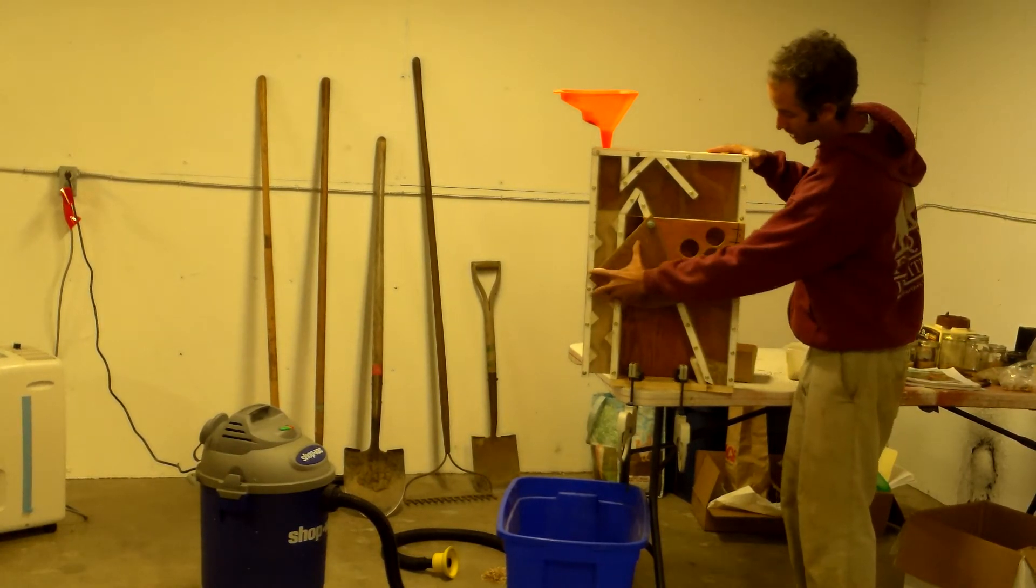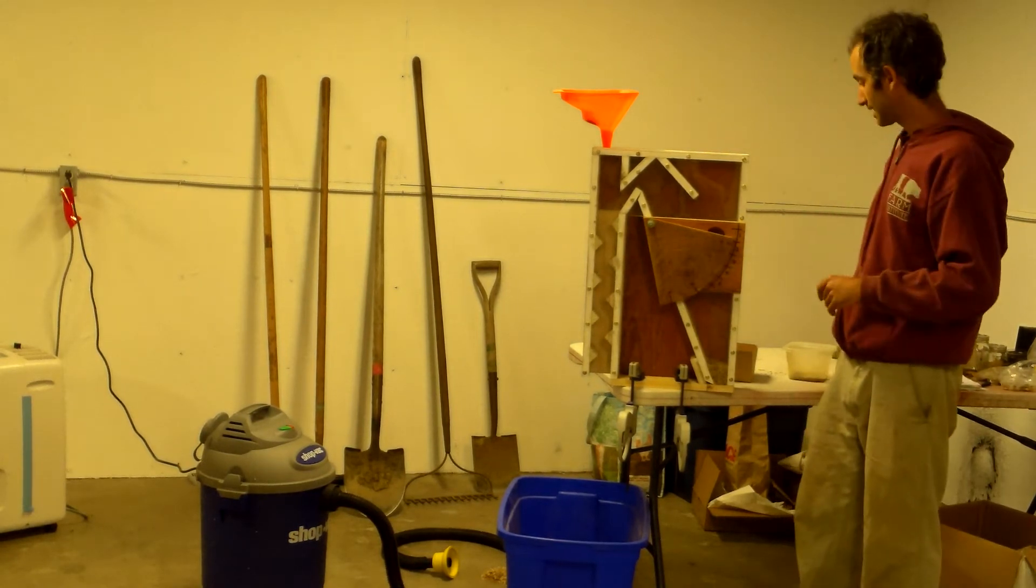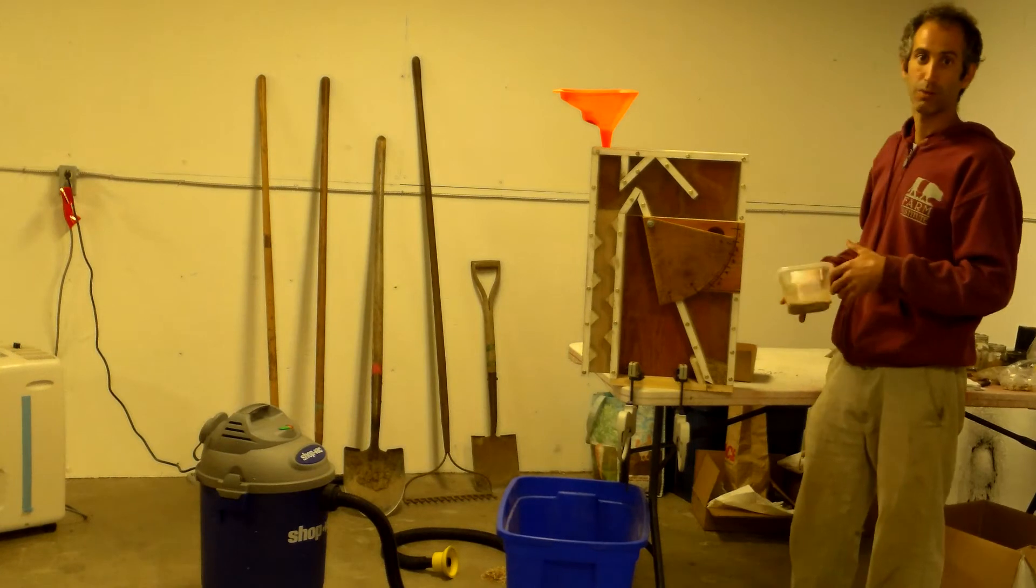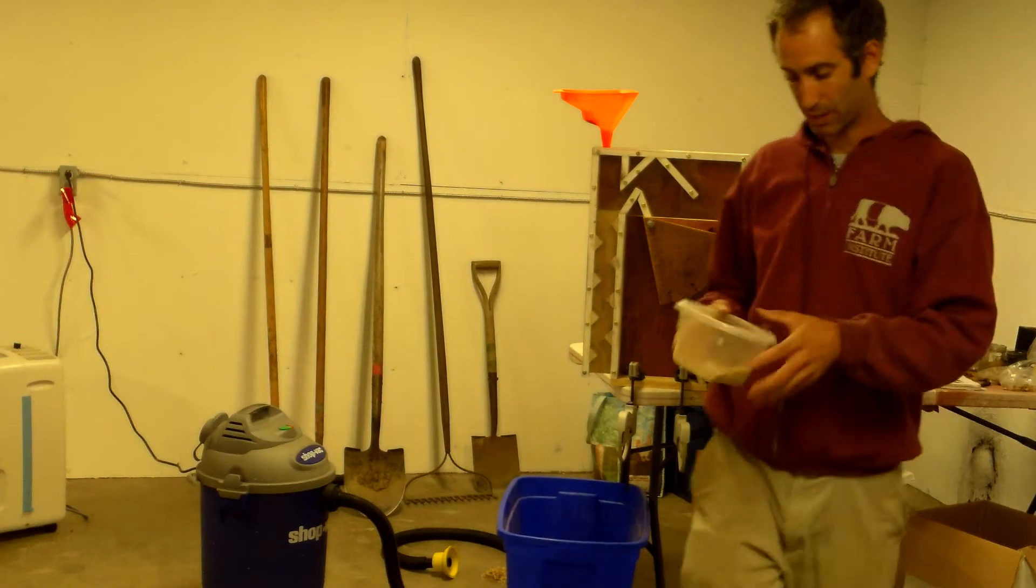And this is how you just control how much airflow you want. So you can use this for really light seeds, small flowers and lettuce, all the way up to the brassicas and even cucumber seed. And here's what the seed looks like before it's cleaned.